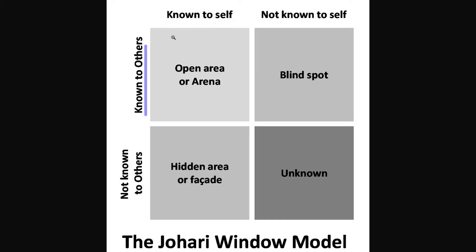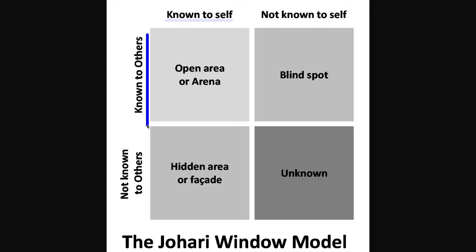I'm going to show you something called the Johari Window. Full transparency, I actually learned this in therapy, but this model especially relates to setting up software and having to partner with people. There are four different quadrants inside of the Johari Window model. The first one is what's known to self and what's known to others. For you, known to self is you, and known to others is a Zoho implementation partner.